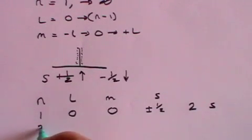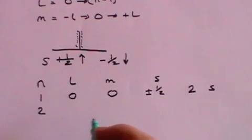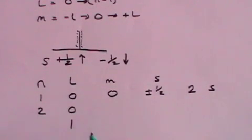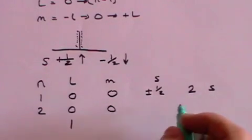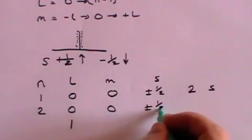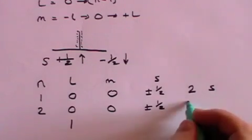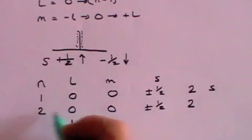Now let's have a look and see what happens when n is two. Now you've got two options for l: it can be zero or one. If l is zero, m must be zero, and once again you can have up or down electrons, which means there are two possible states for electrons here and again that is an s shell because l is zero.